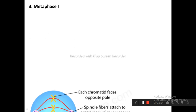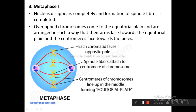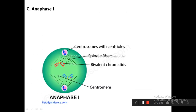Metaphase 1: the nucleus disappears completely and formation of spindle fibers is completed. Overlapped chromosomes come to the equatorial plane; they are arranged such that their arms face towards the equatorial plane while centromeres face towards the poles. Each chromatid faces the opposite pole. Spindle fibers attach to the two centromeres of each chromosome, which line up in the middle forming the equatorial plate.